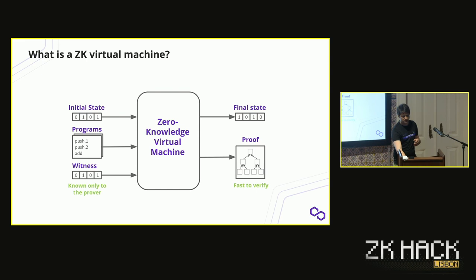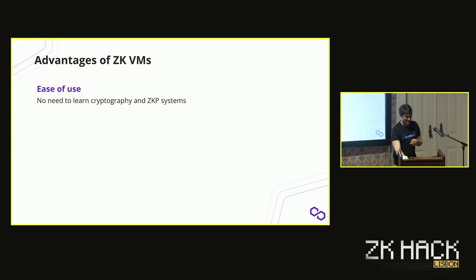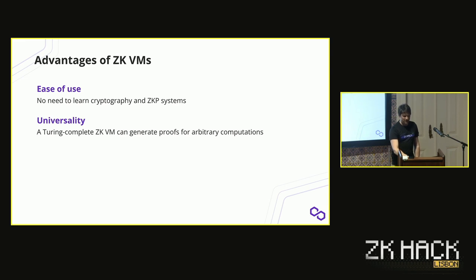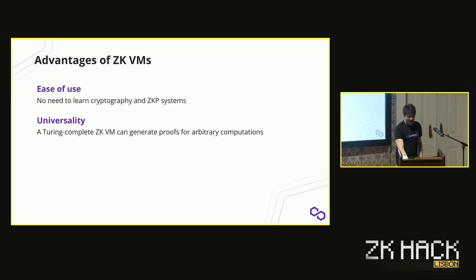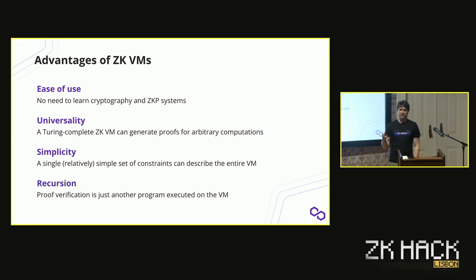The verifier does not need to have access to the witness, so I can add secret data I don't want to show to the verifier. This is a zero-knowledge virtual machine. The proof is very fast to be verified, but it might take longer to be produced, and the witness is only known to the prover. Compared to writing circuits, our goal is that the Miden VM should be easier to use, easier to write programs in our Turing-complete language, Miden assembly.